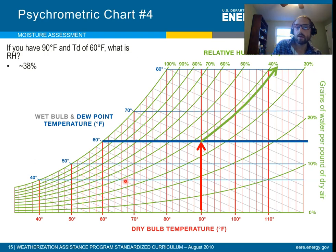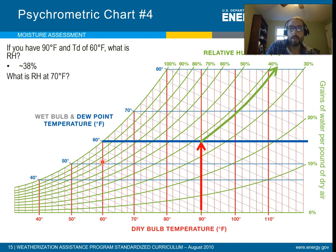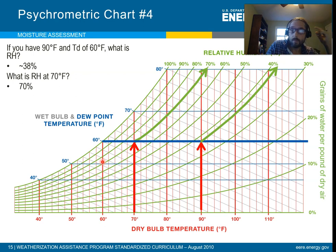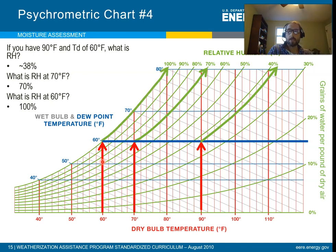Let's go the other direction. Our same starting point: 90 degree dry bulb, 60 degree dew point, 38% relative humidity, which would be about a 70 degree wet bulb. Now we cool the air down to 70 degrees — our relative humidity is now 70%. What if we go all the way to 60? You'll notice 60 degrees is our dew point, so if we get all the way to 60, we're at actually 100% relative humidity.